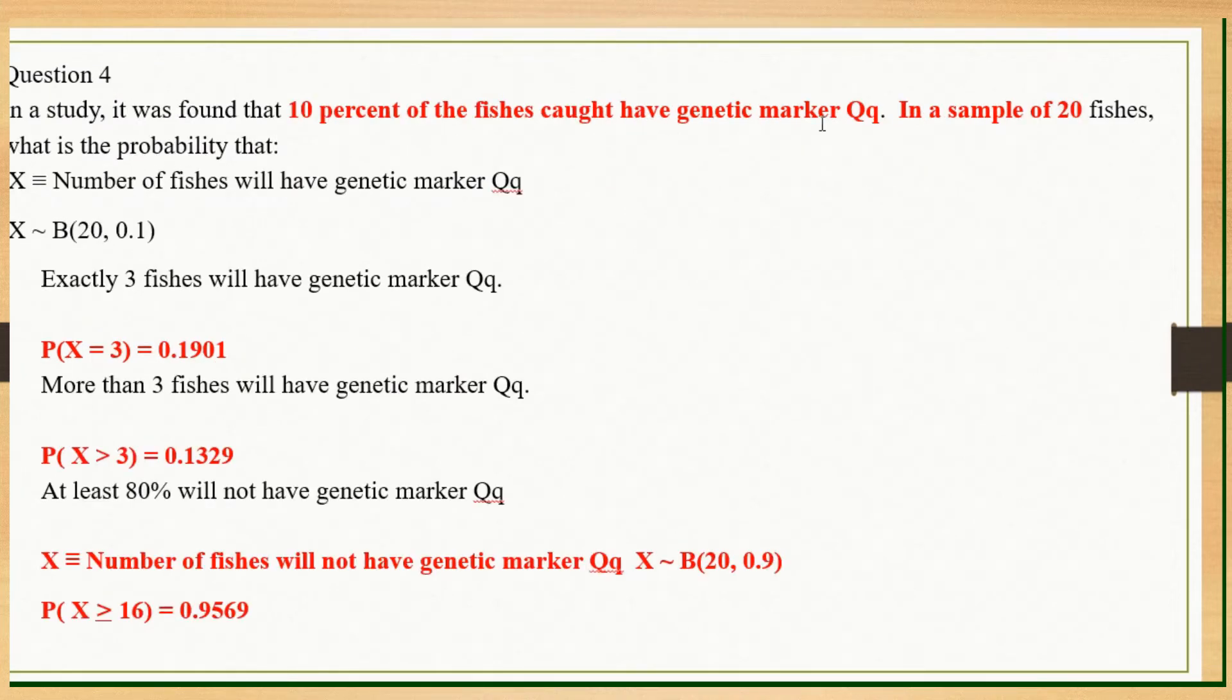Question 4. 10% of the fishes caught have genetic marker QQ in a sample of 20. This tells you it's binomial distribution. Number of fishes with the genetic marker QQ, N is 20, P 0.1. And you calculate everything as usual. Only the last one will be a little different. At least 80% will not have genetic marker QQ. So number of fishes that will not have genetic marker QQ, it will be N still 20. Your P will be 0.9 because 0.1 will have. Will not have will be 0.9.